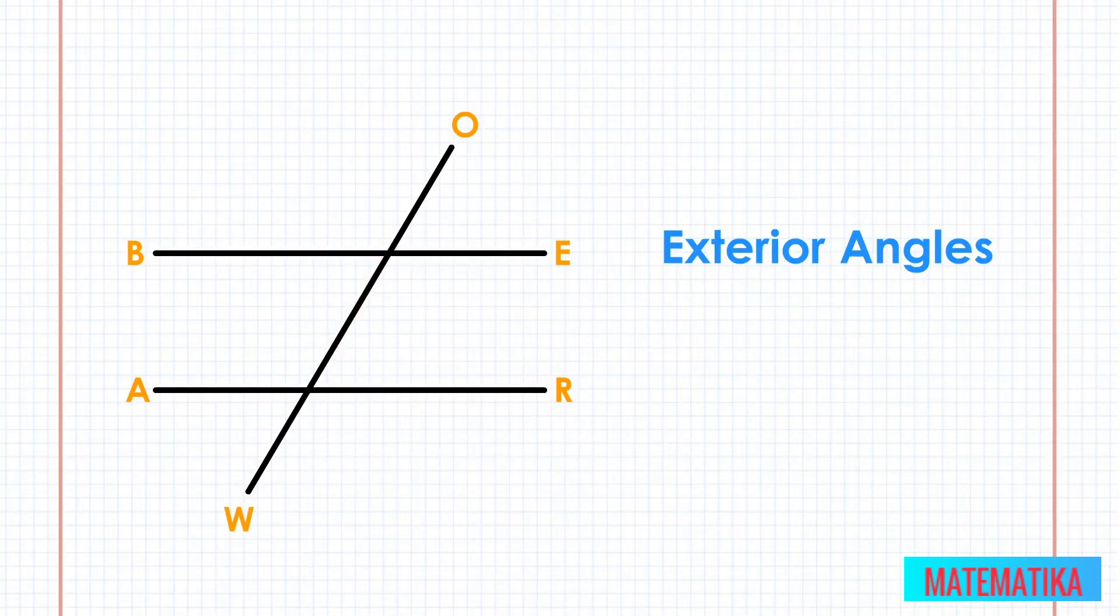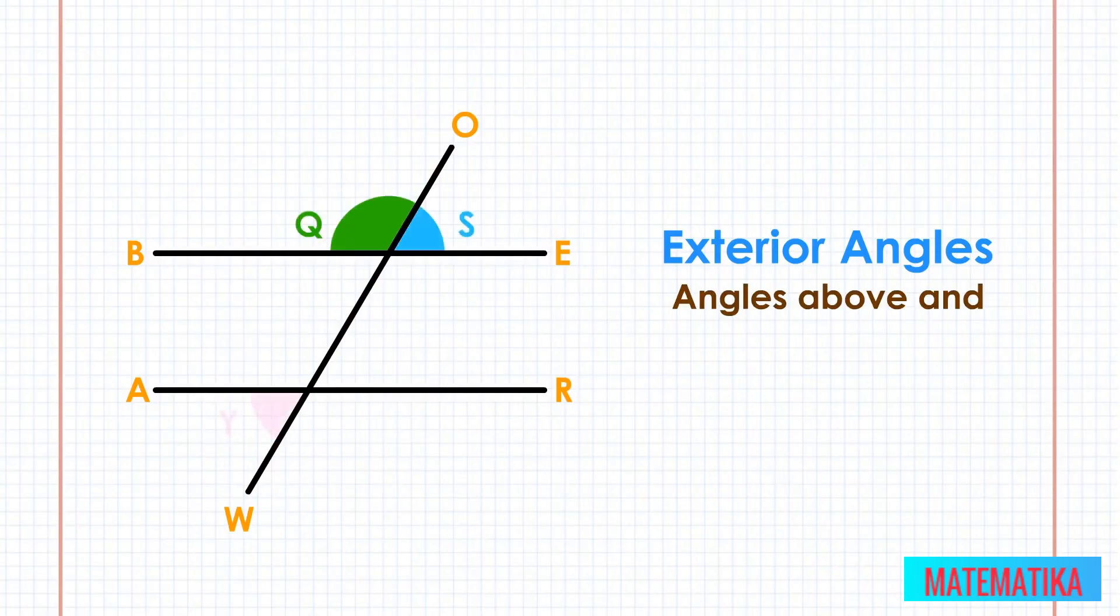The same is true with parallel lines BE and AR and their transversal OW. The angles above and below the parallel lines are outside and are called exterior angles.